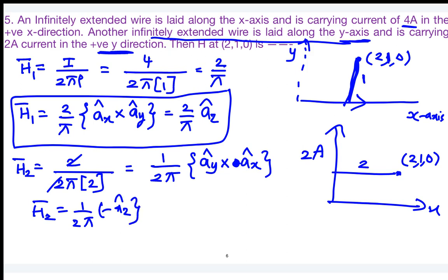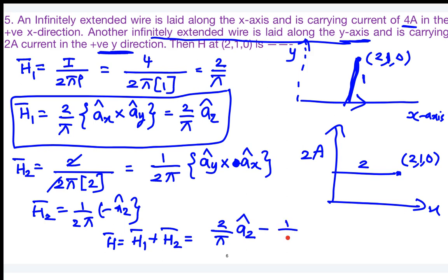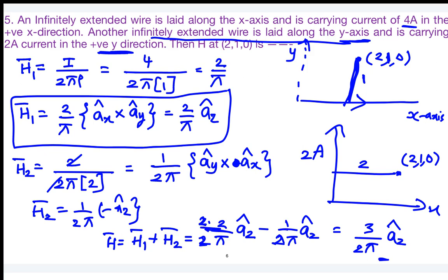The total magnetic field intensity H = H₁ + H₂ = (2/π) â_z − (1/(2π)) â_z. Making the denominator common: (4/(2π) − 1/(2π)) â_z = 3/(2π) â_z amperes per meter.